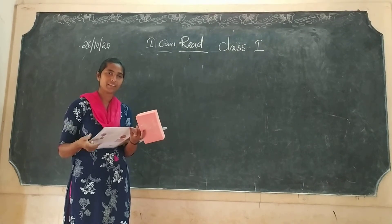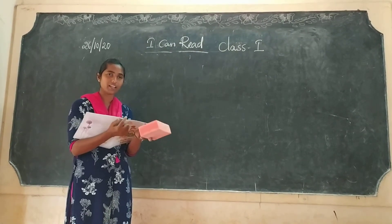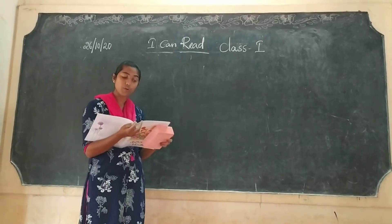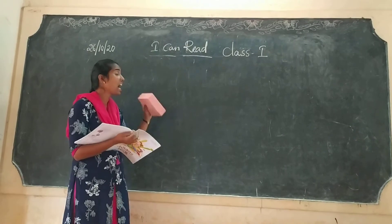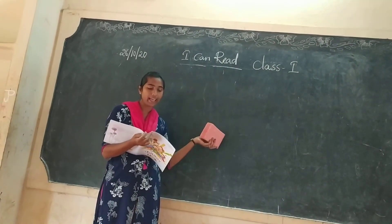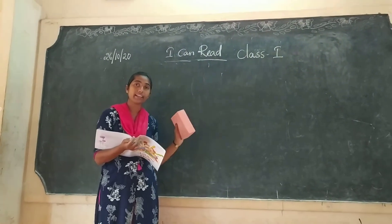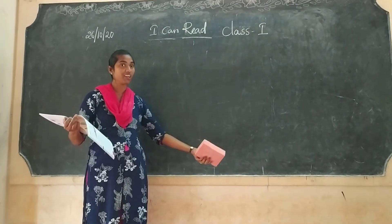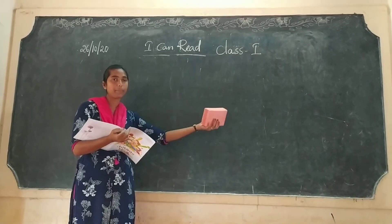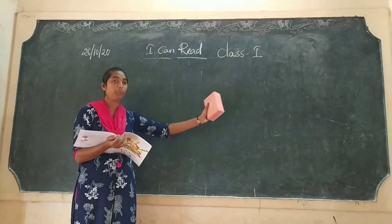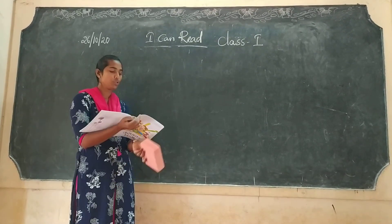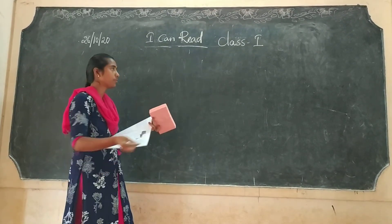Did you understand anything? So I will explain you line by line. Where was the cat? What was the cat? The cat was fat. The cat sat on a mat. The mat — I will explain the words. The mat is a mat.